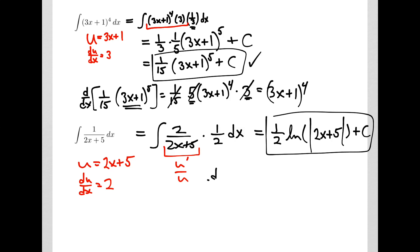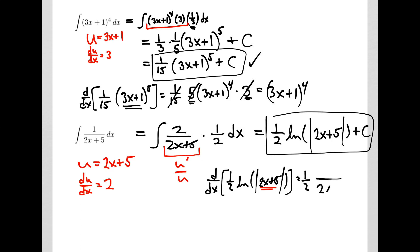And we check: if I took a derivative of 1 half times the logarithm of the absolute value of 2x plus 5, 1 half is a constant multiple. I've got a u inside a logarithm, so it's going to be 1 over u times u prime. Because those cancel, I get 1 over 2x plus 5, which is exactly my integrand. So we found the right antiderivatives.